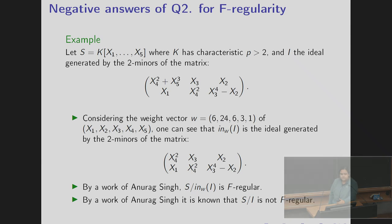Then we go to the second questions. So we give negative answers for the questions that S mod initial ideal have F-regularity but S mod I does not have. So this is the example taken from Anurag Singh's work. So S be a polynomial ring in 5 variables that I be the ideal generated by 2 by 2 minors. Then if we consider the weight (6, 24, 6, 3, 1) then initial ideal is the ideal of this matrix where X to the power 5 is not there. Then again by a work of Anurag Singh, S mod initial ideal is F-regular but S mod I is not F-regular.